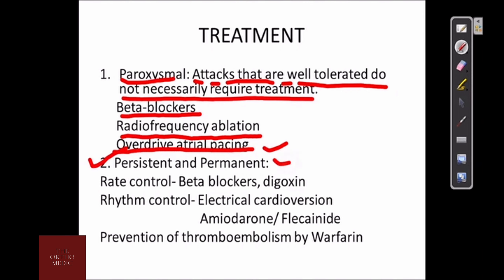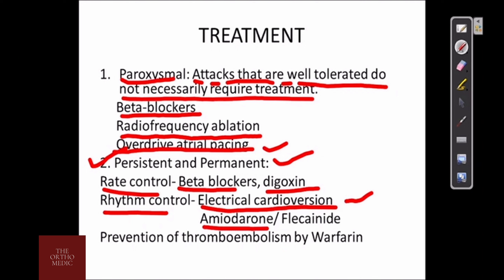If persistent and permanent, then for rate control, beta blockers and digoxin are given. For rhythm control, electrical cardioversion can be done. If not available, then amiodarone or flecainide can be given. For prevention of thromboembolism, warfarin can be given.